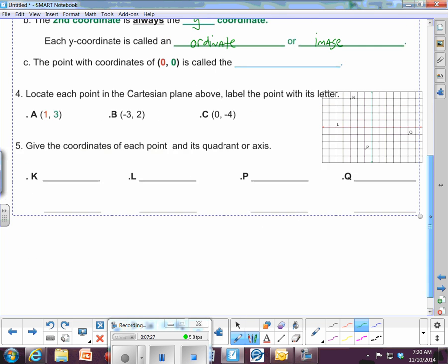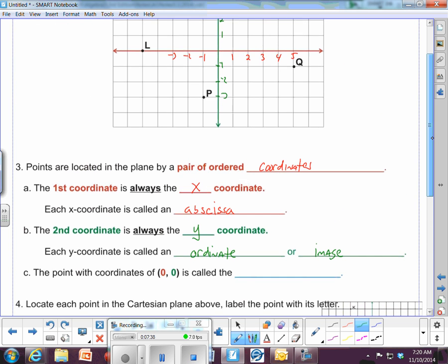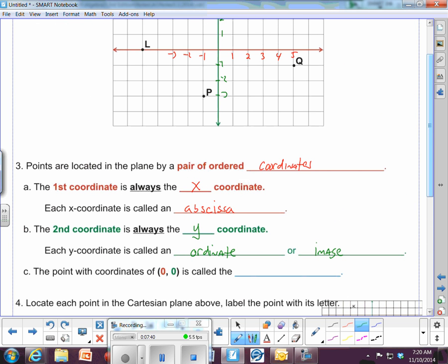Let's finish off C there. And the point with coordinates 0, 0, again, the X is first, and the Y is second, is called the, and do you know? You've got to think back to Genesis and beginnings. It's called the origin, O-R-I-G-I-N, the origin. And again, that's the 0, 0 point right there where the axes intersect, the origin.